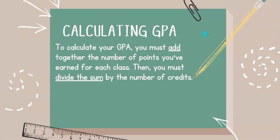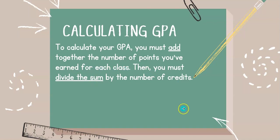To calculate your GPA, it's a very simple math equation. First, you must add together the number of points you've earned for each class. Then you must divide the sum by the number of credits.